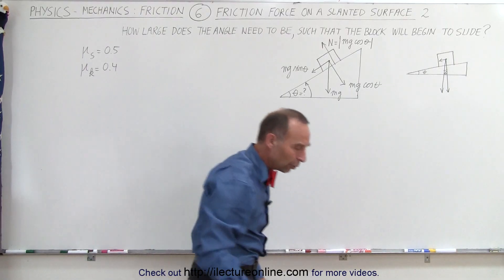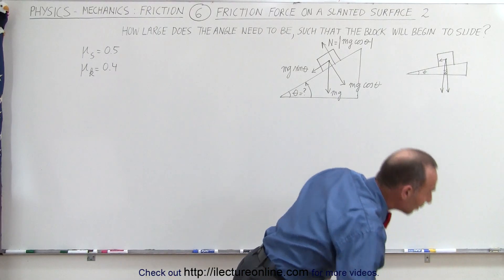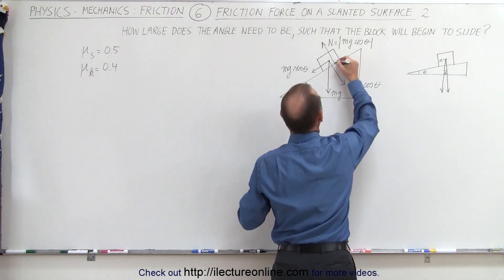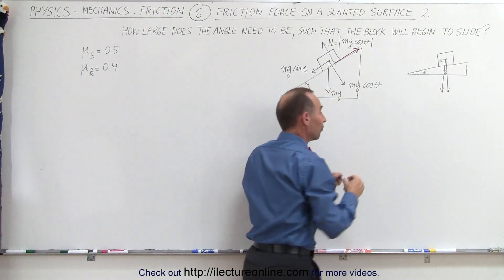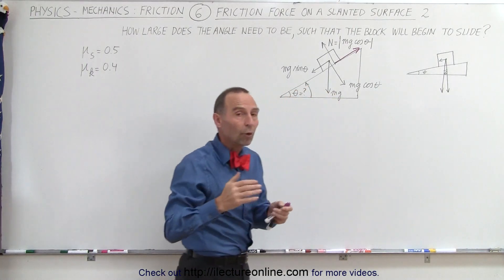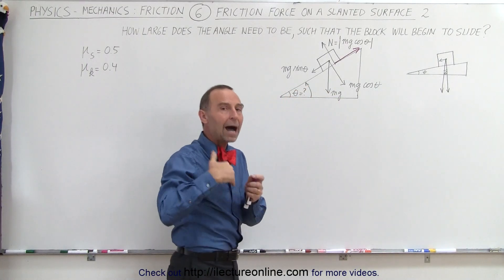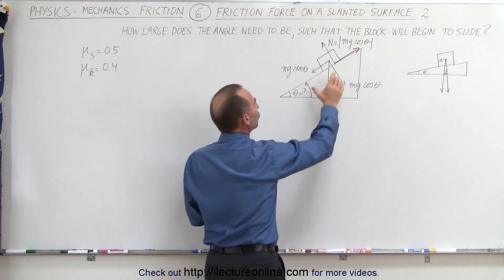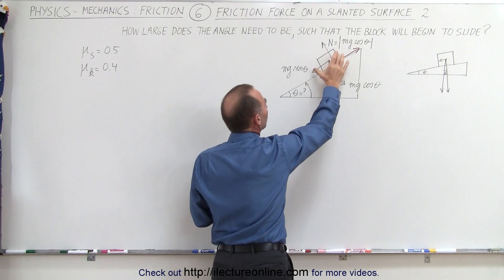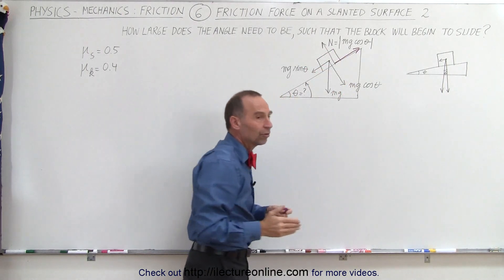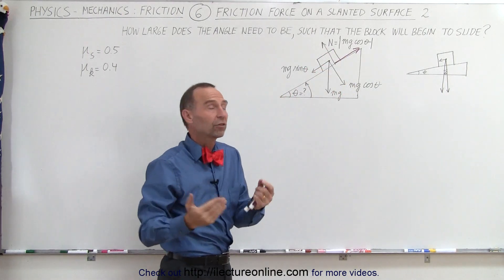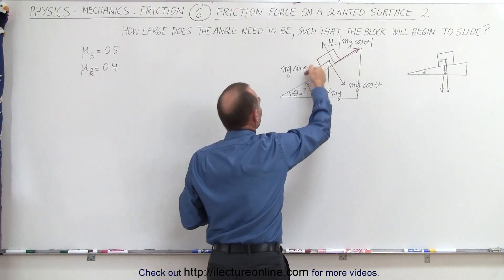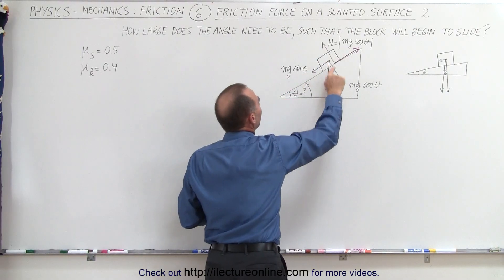Now, the friction force is going to be in this direction. How do we know that? Well, the friction force is always in the opposite direction of the motion that the object will have without the friction force. If there was no friction force, the object would be sliding down the incline. Therefore, the friction force must be pointing in the opposite direction.